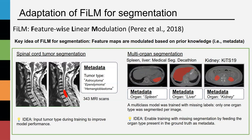First, we wanted to verify if inputting information relevant to the segmentation could help the performance. To do so, we trained a model for spinal cord tumor segmentation and included the tumor type associated with the patient using FiLM.